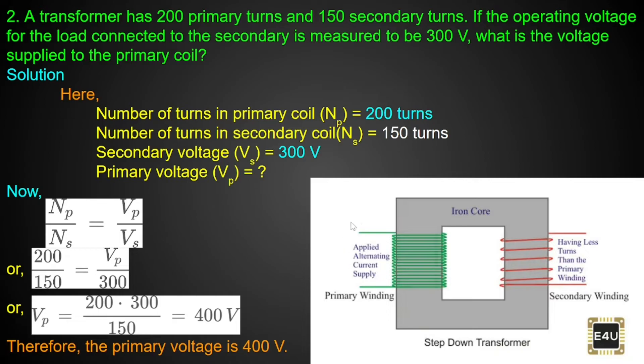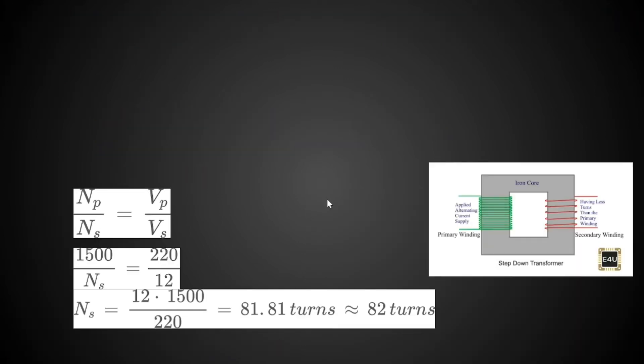So what type of transformer is this? It is a step-down transformer. In a step-down transformer, the secondary voltage is lower than the primary voltage. Here Vs is 300 volts and Vp is 400 volts, confirming it is step-down.